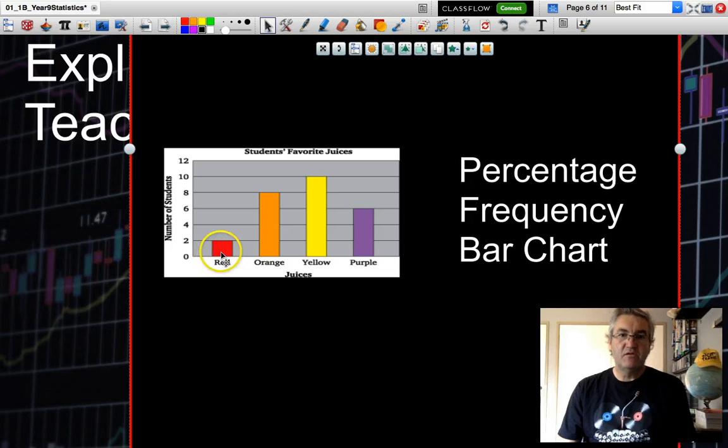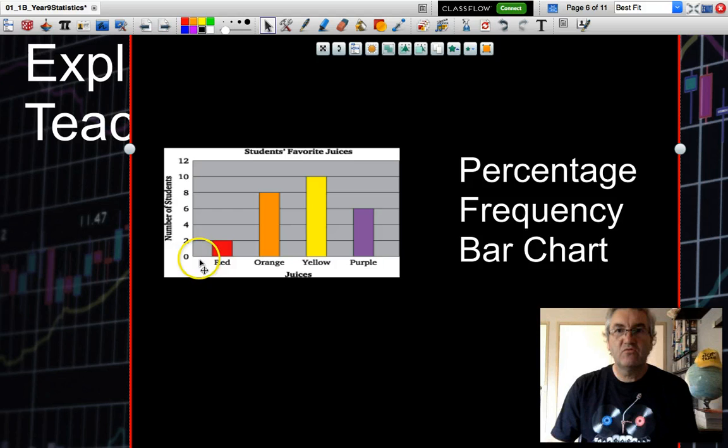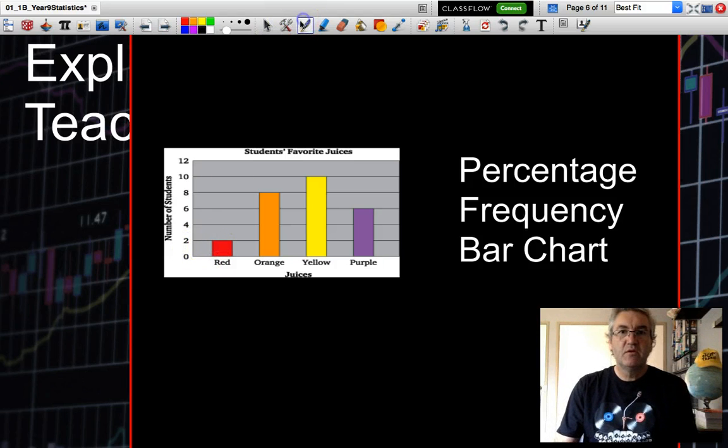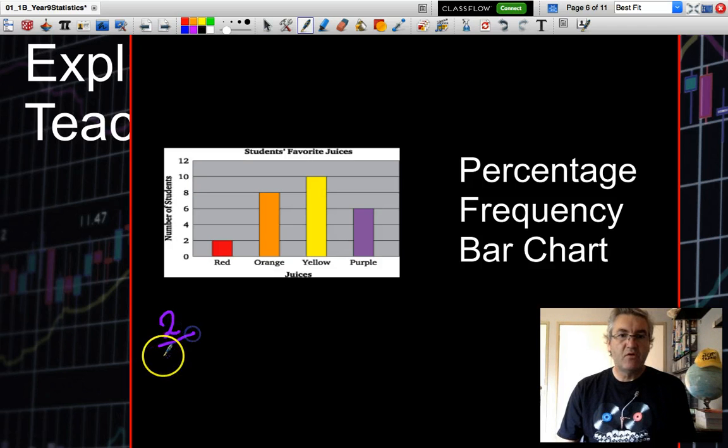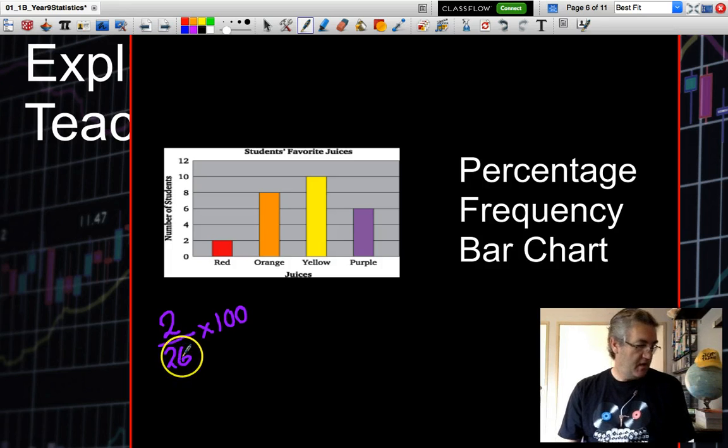And then I'd need to convert each one of these to a percentage. So if I needed to convert red to a percentage, I'll just grab a pen here. And this is the way that I would do this. I would add 2 out of a total of 26, and I need to multiply that by 100. So that's the number, like the red juice, divided by the total number of students that were surveyed. And that equals 7%.